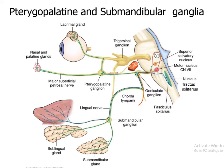The pterygopalatine and submandibular ganglia receive their parasympathetic fibers from the facial nerve. The greater petrosal nerve, carrying pre-ganglionic parasympathetic fibers from the facial nerve, synapses with post-ganglionic parasympathetic fibers at the pterygopalatine ganglion in the pterygopalatine fossa. The post-ganglionic parasympathetic fibers supply the lacrimal gland and nasal and palatine glands from the pterygopalatine ganglion.